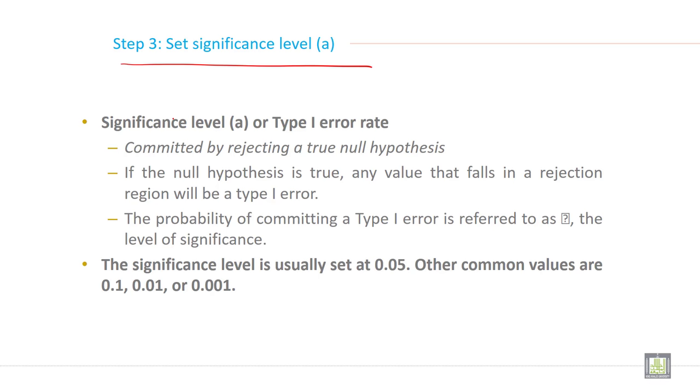Significance level alpha or Type 1 error rate is committed by rejecting a true null hypothesis.